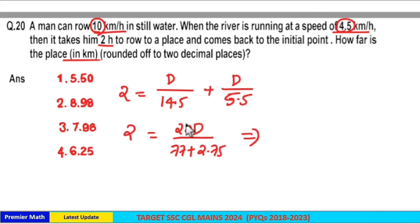Now 2 and 2 cancel. So d, distance, is equal to 79.75 divided by 10, that is 7.975. Option 3 is your answer.